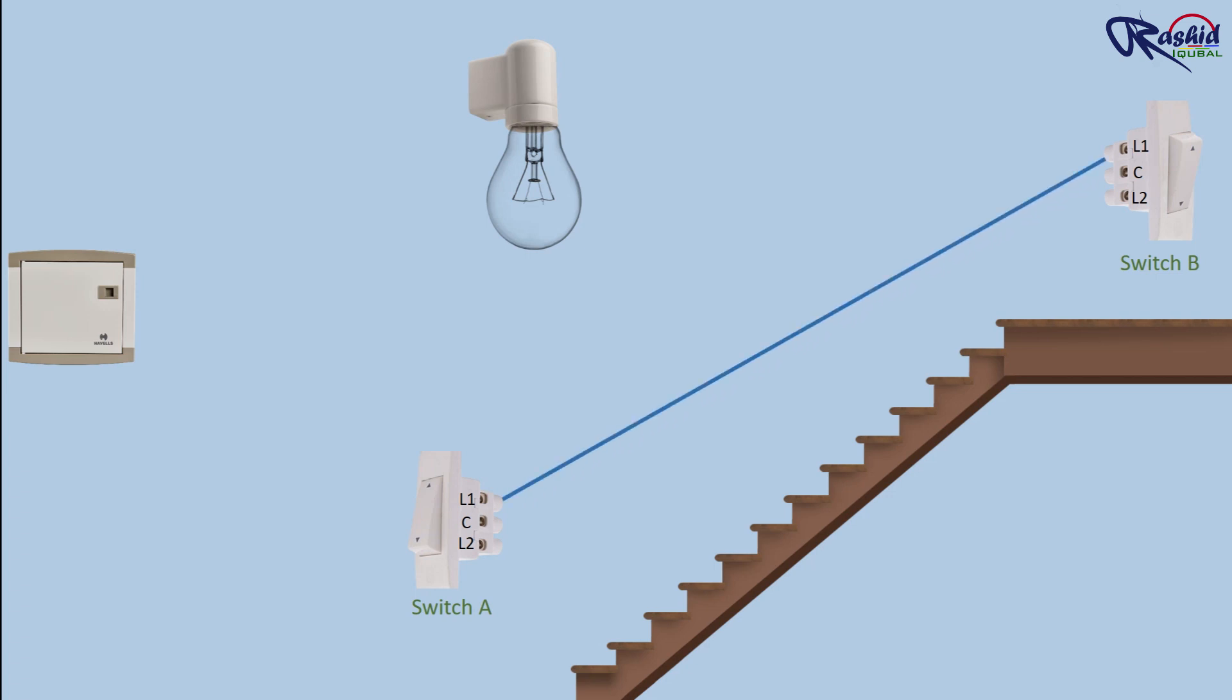L1 of switch A connects to L1 of switch B, then L2 of switch A connects to L2 of switch B. We take power supply from the main consumer unit or DB to the common terminal of the switch. The other common terminal connects to the light fixture. We take the neutral directly from the main power supply DB to the lighting fixture.